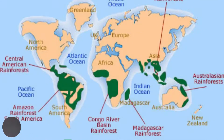The tropical rainforest is located in lowland areas between 5 to 10 degrees north and south of the equator. The tropical rainforest can be found in places such as the Amazon basin in South America, the Congo basin in Africa, eastern Australia, as well as Indonesia.